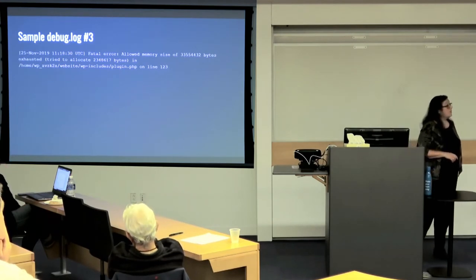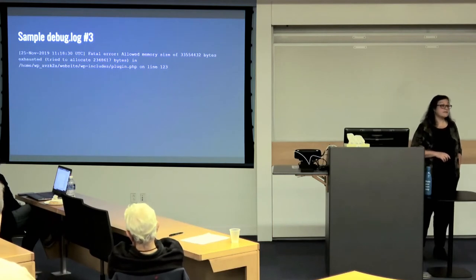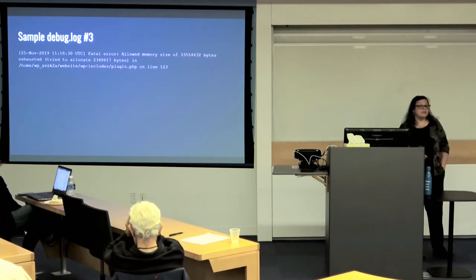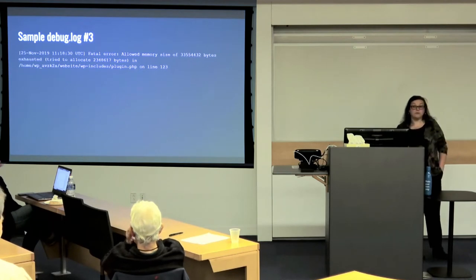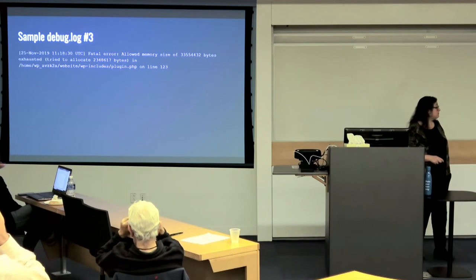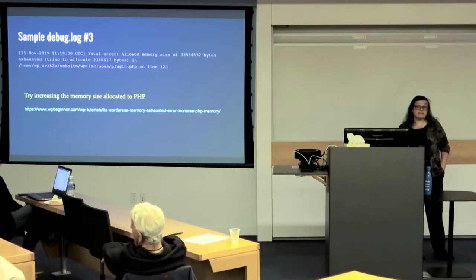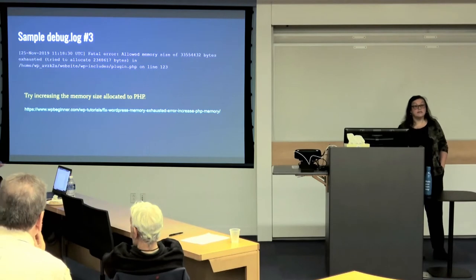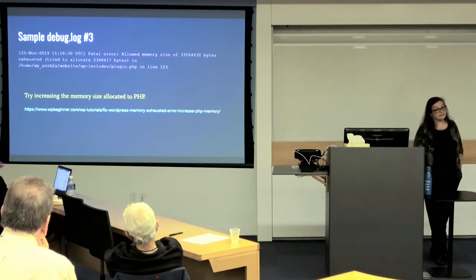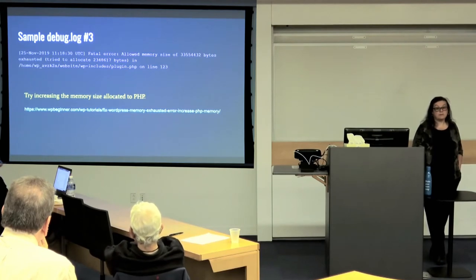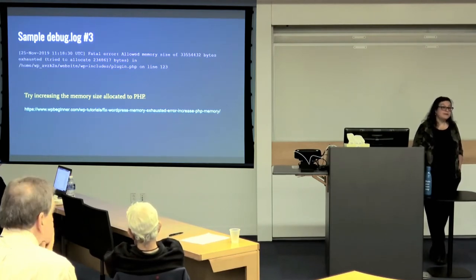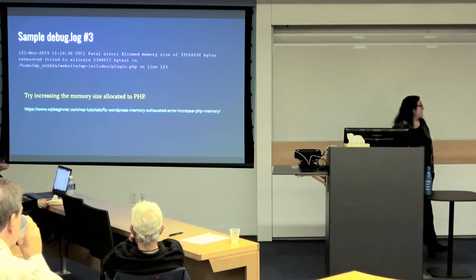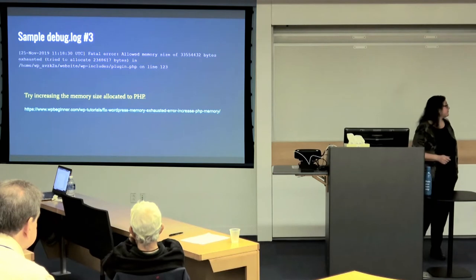A third example you see a lot during imports or exports or anything with heavy data crunching: 'PHP fatal error: allowed memory size of [X] exhausted.' This basically means PHP has run out of the memory allocated to it. You can set a higher memory limit in wp-config, although some hosts control that more tightly. If it doesn't work via wp-config, contact your host support — they may be able to set it in cPanel, or it could be that you're on a web host that needs upgrading.